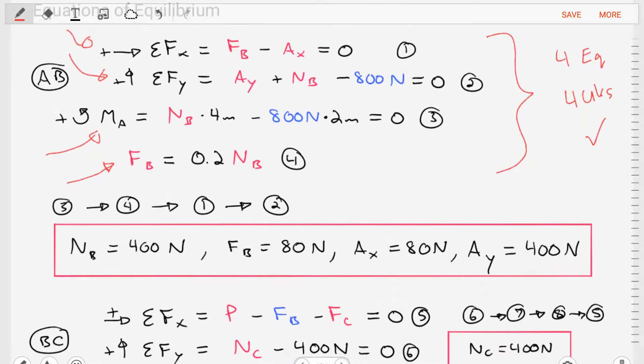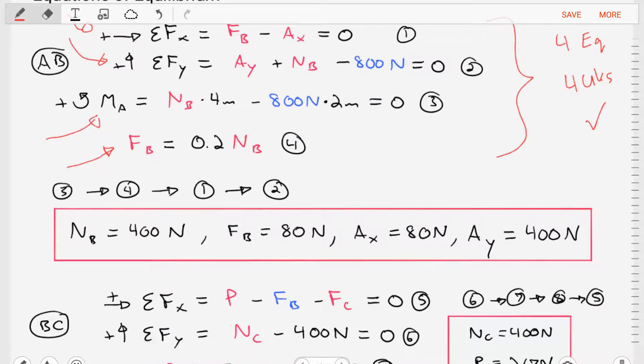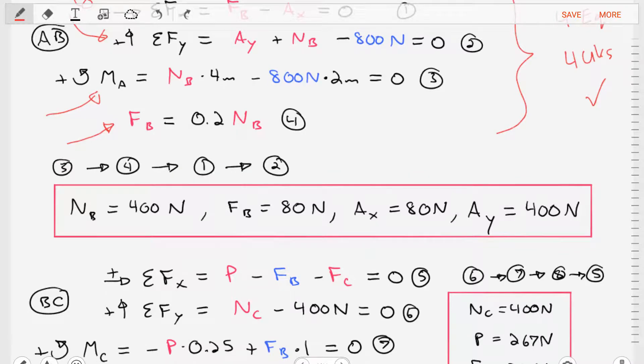In our solving procedure, we'll solve equation three first, then equation four, equation one, and then equation two, in order to get our four unknowns, where NB is equal to 400 newtons, FB is equal to 80 newtons, AX is equal to 80 newtons, and AY is equal to 400 newtons.